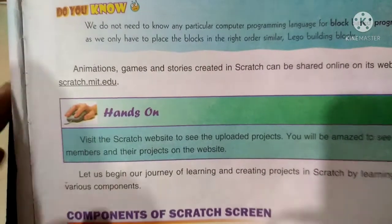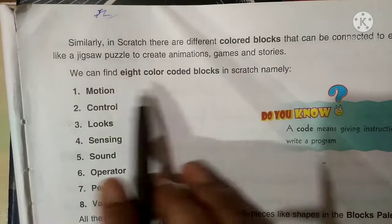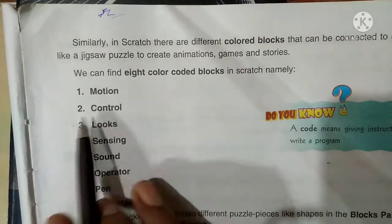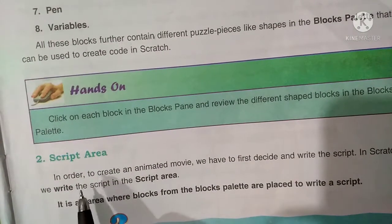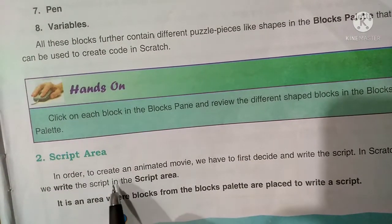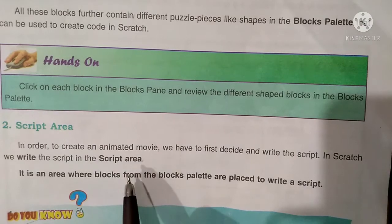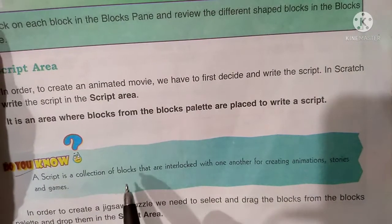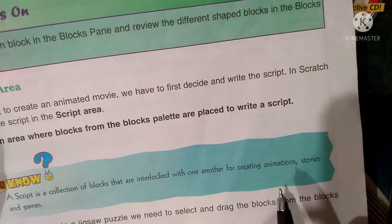Components of a Scratch screen. The blocks pane contains 8 color-coded blocks in Scratch, namely motion, control, looks, and more. A code means giving instruction to write a program. The second component is the script area. In order to create an animated movie, we have to first decide and write the script. In Scratch, we write the script in the script area. A script is a collection of blocks that are interlocked with one another for creating animation, stories, and games.